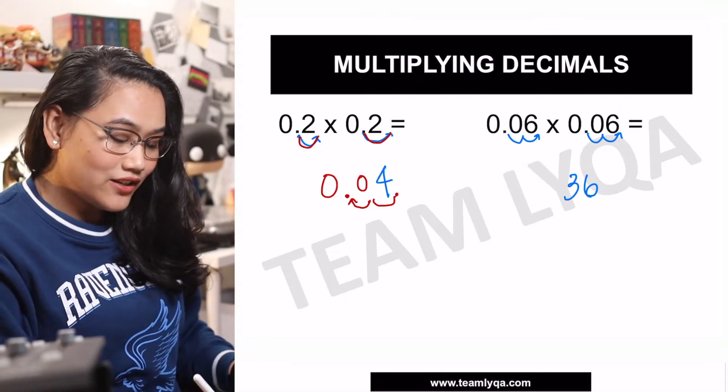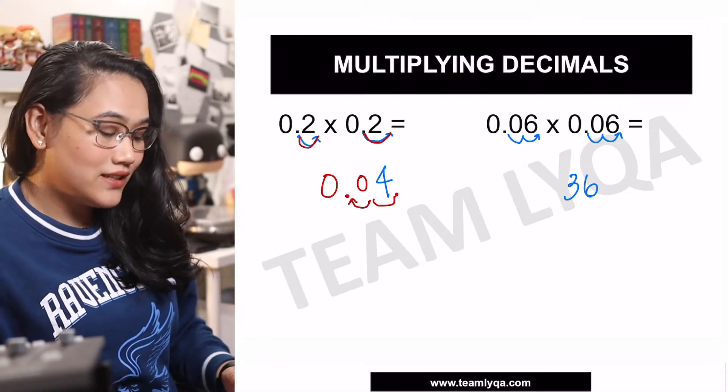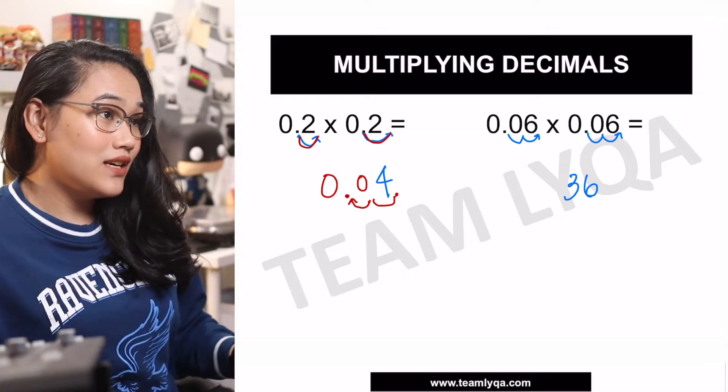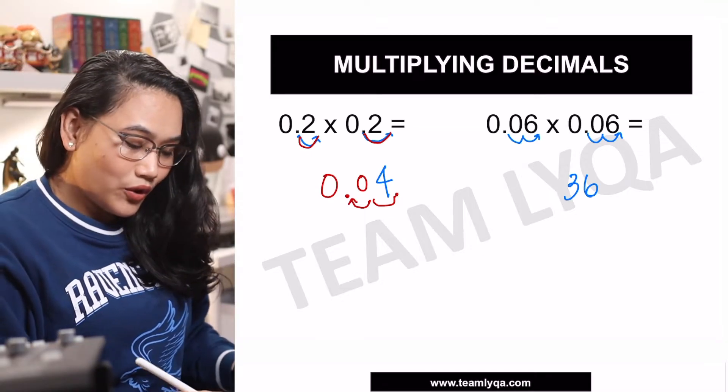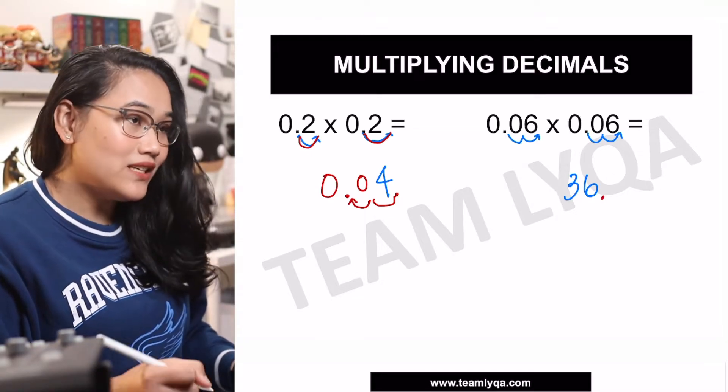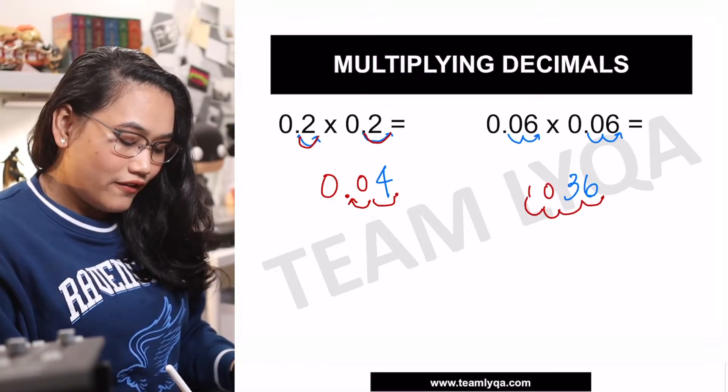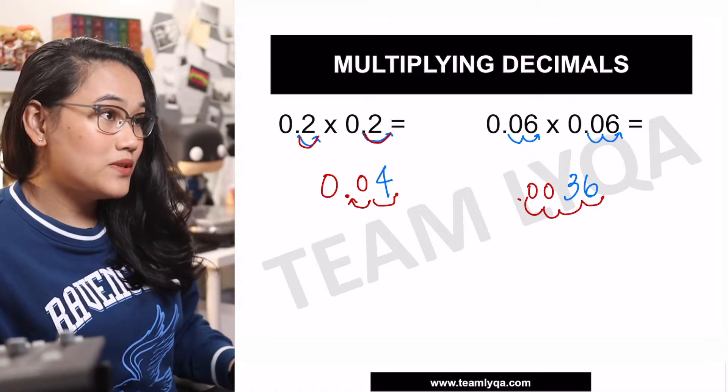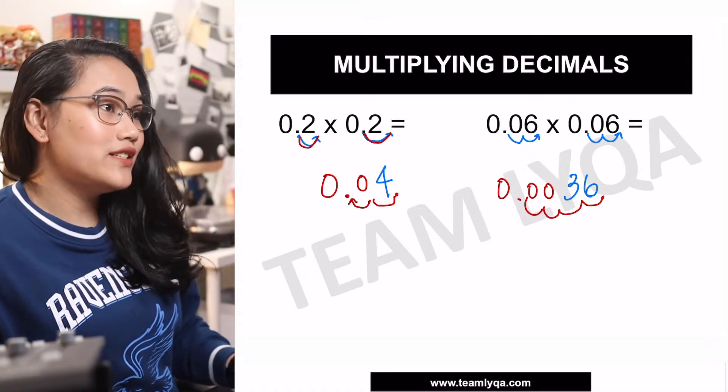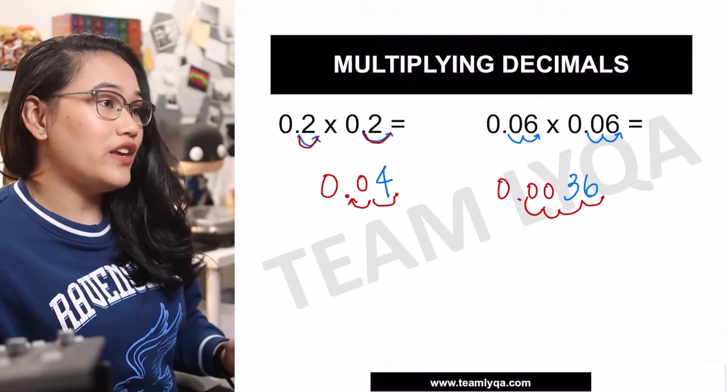Again, that's not the final answer yet. You moved the decimal place twice and twice. 2 plus 2 is 4. So you're going to have to move the decimal place that's there. 1, 2, 3, and 4 jumps. So the answer is 0.0036.